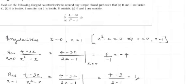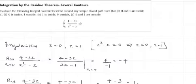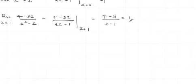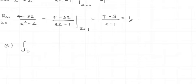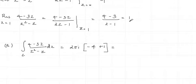For Part A, both singularities 0 and 1 are inside the curve C. Hence the integral of (4 − 3Z) / (Z² − Z) dZ equals 2πi times the sum of the residues: (−4) + 1 = −3. So the answer is 2πi × (−3) = −6πi.